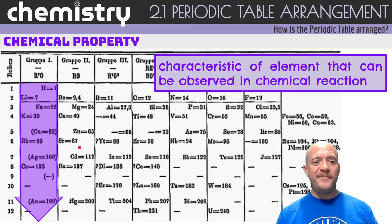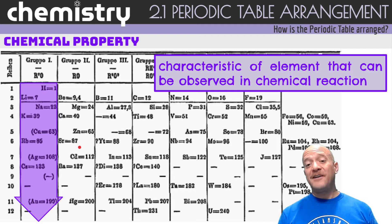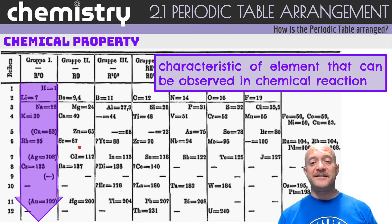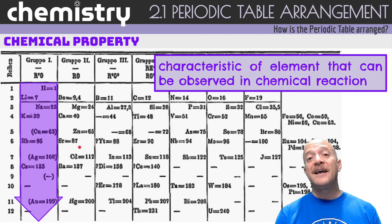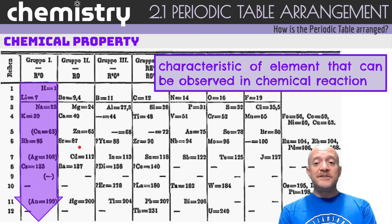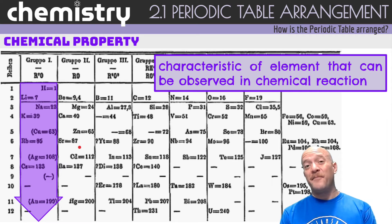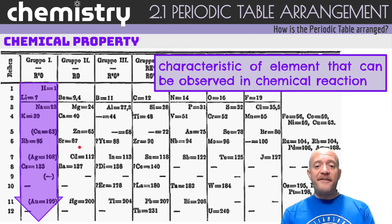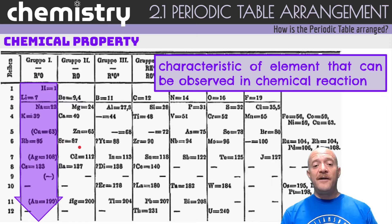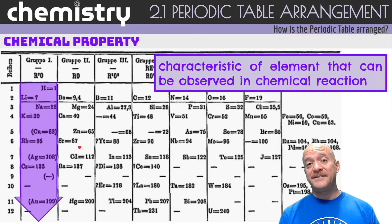Mendeleev arranged the elements by their order of reactivity and also by their atomic mass. He noticed that certain trends kept appearing periodically, so he arranged them according to reactivity — and this is the basis for the modern periodic table.